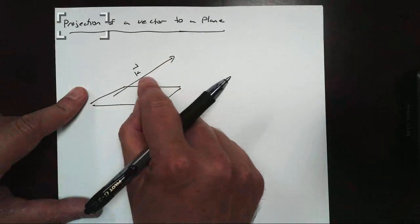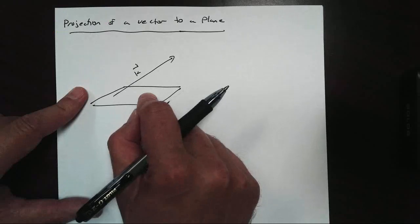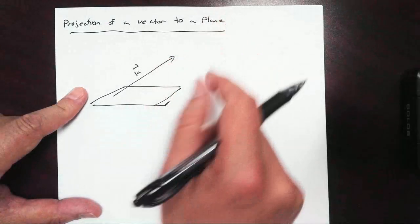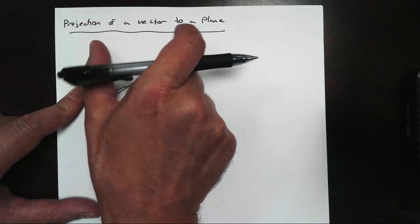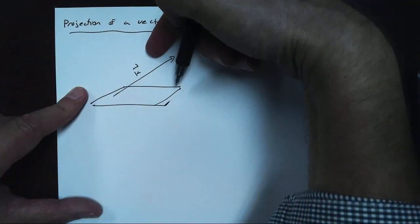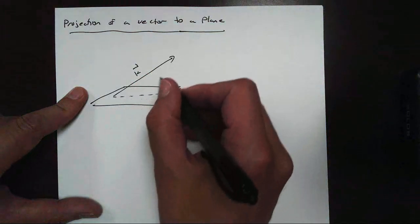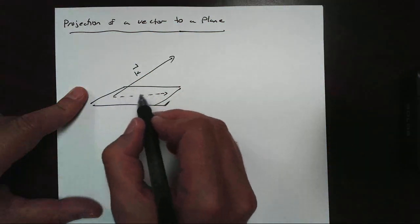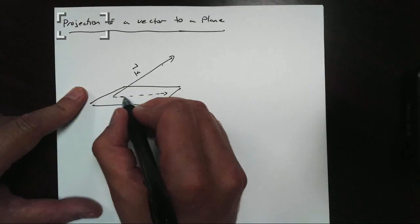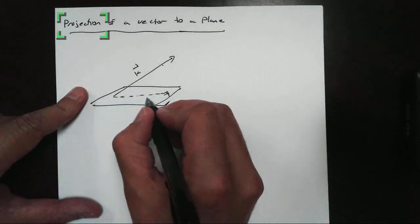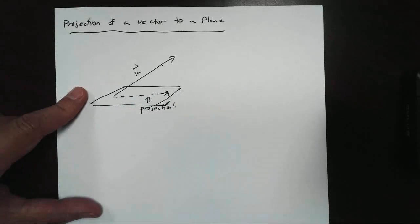So we want to find the projection of this vector K onto this plane right here. In order to do that, we've got to remember that a projection is like imagining shining an imaginary flashlight from up top of this vector, and it's going to shine down and make a shadow on our plane down here. And what we want to find is this bit right here — this is the projection that we're looking for.